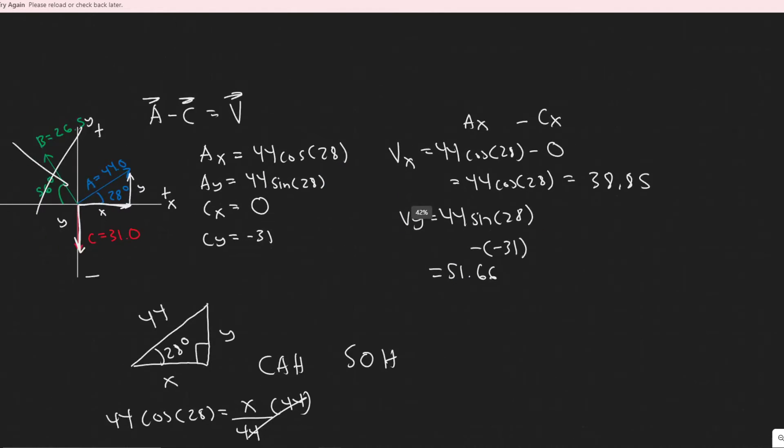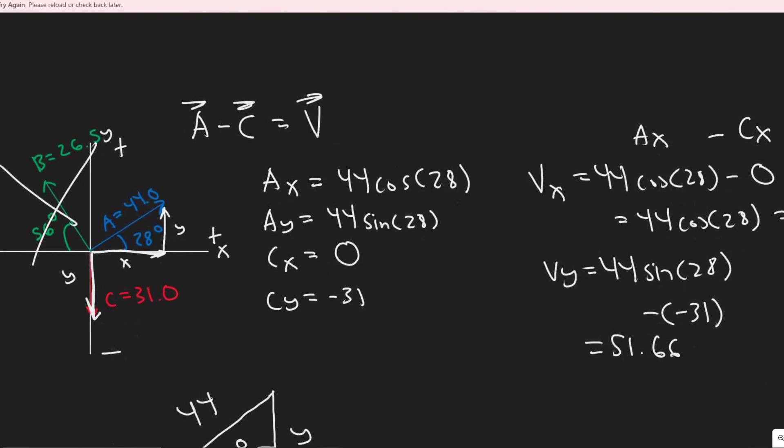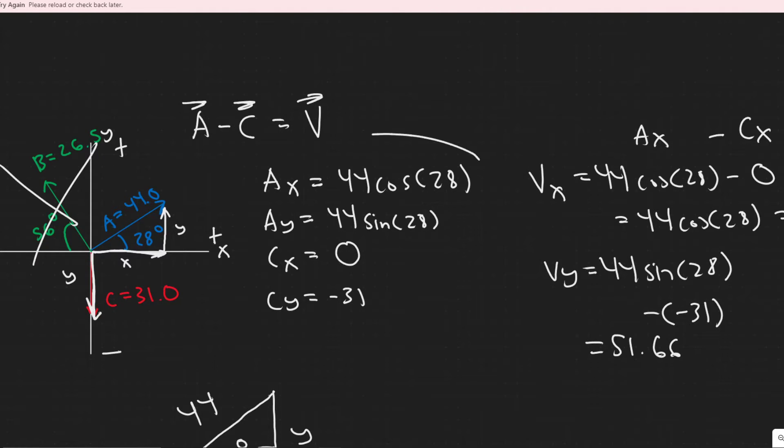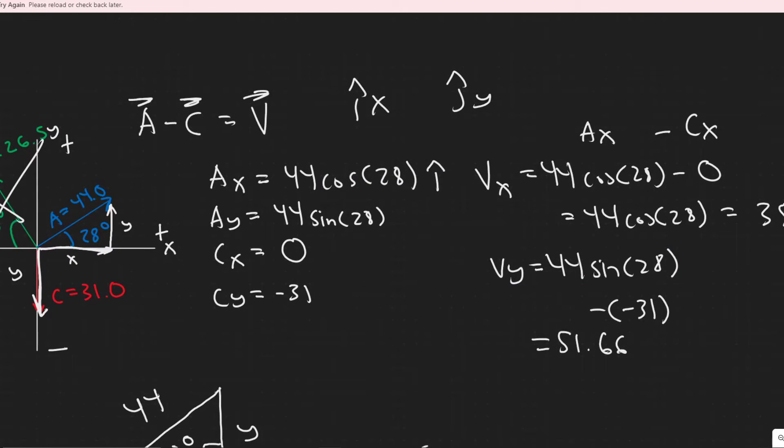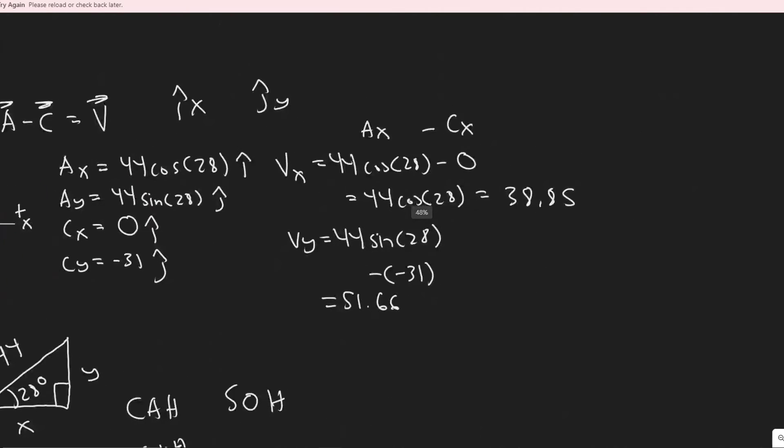And so another thing that I didn't really teach you guys, because I think this is just the basics of vectors. Generally, when you write x components, you do it with a unit vector next to it. So you would really say that x component A sub x is 44 cos of 28 i-hat, where i-hat is for the x and j-hat is for the y. Basically just signifies that this is in the x. So when you add up the components, you can distinguish which ones are from which. So this would be j-hat, this would be i-hat, this would be j-hat. So this would be i-hat, and then this would be j-hat.